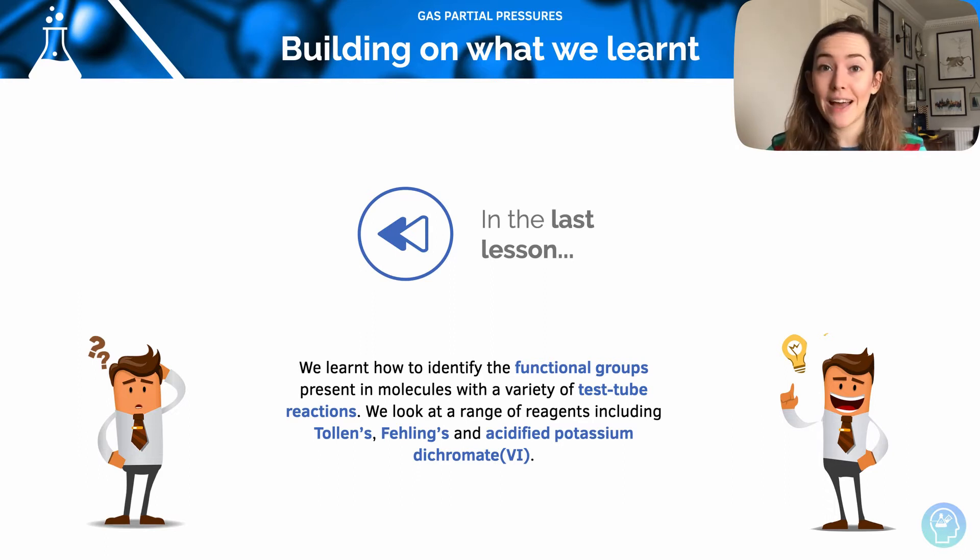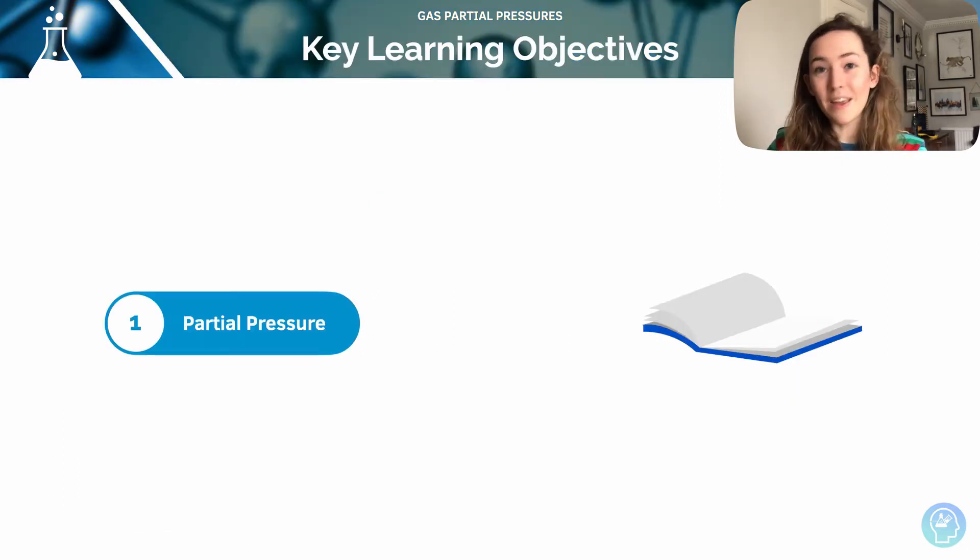So for example we looked at Tollens test, Fehling's and acidified potassium dichromate. In this session we're going to start to explore partial pressure.